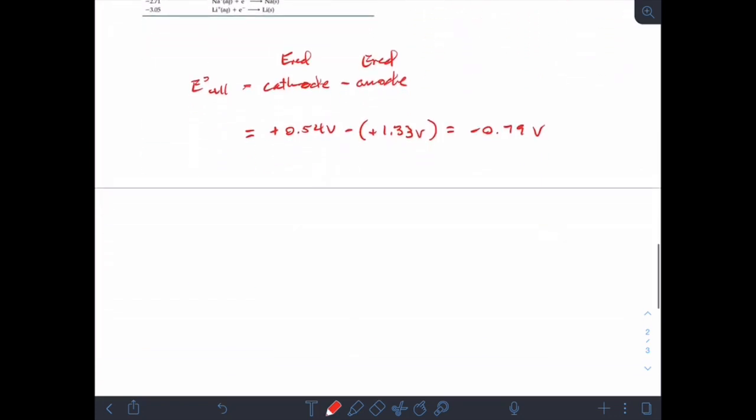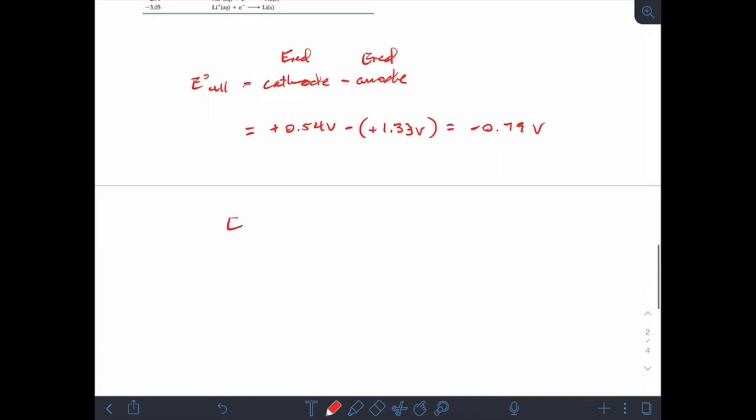So when E0 is negative, E0 cell is less than 0, non-spontaneous as written. And we keep saying that in these scenarios because the reverse will be spontaneous. So if I take that reaction and I write it in the opposite direction, going from chromate ion to chromium ion, that reaction will be spontaneous. It will have a plus 0.79 volts.